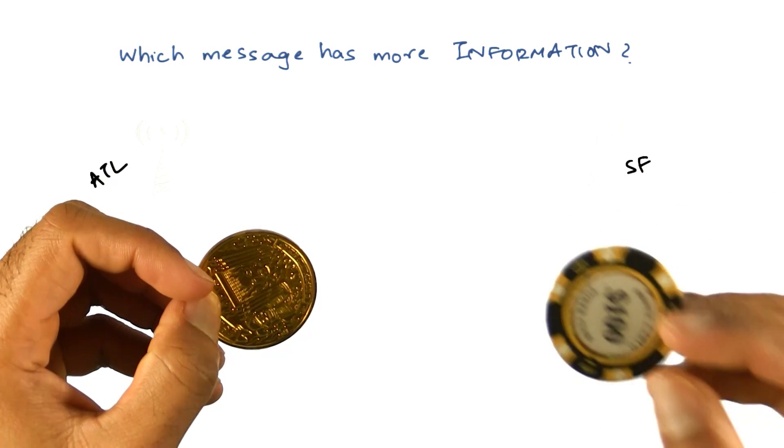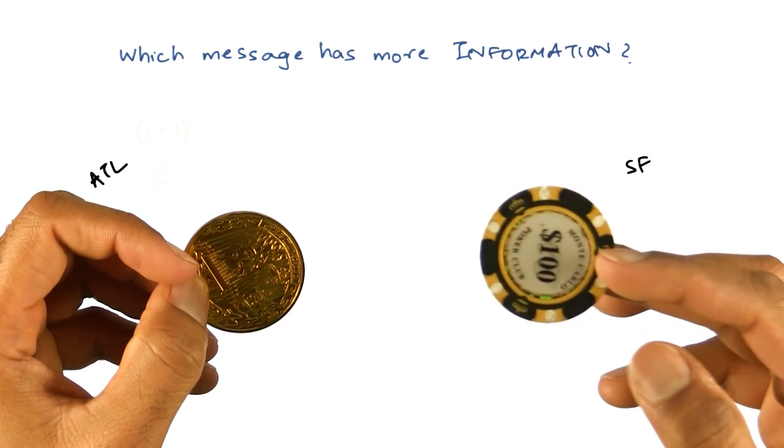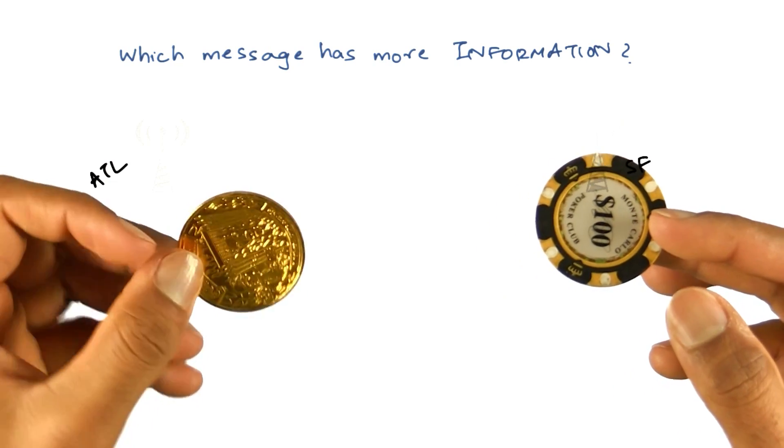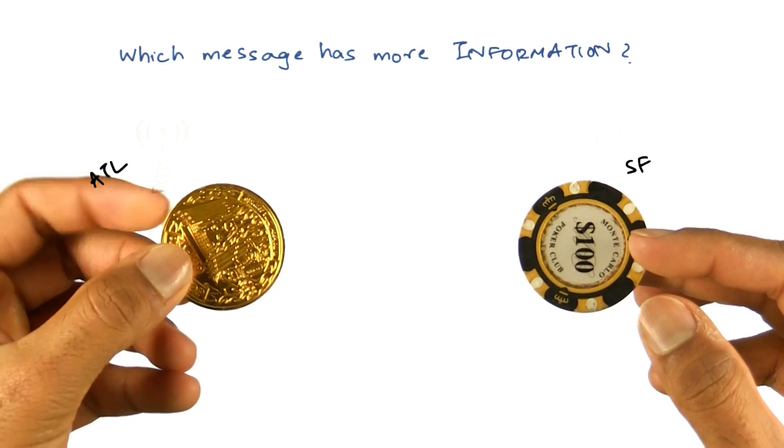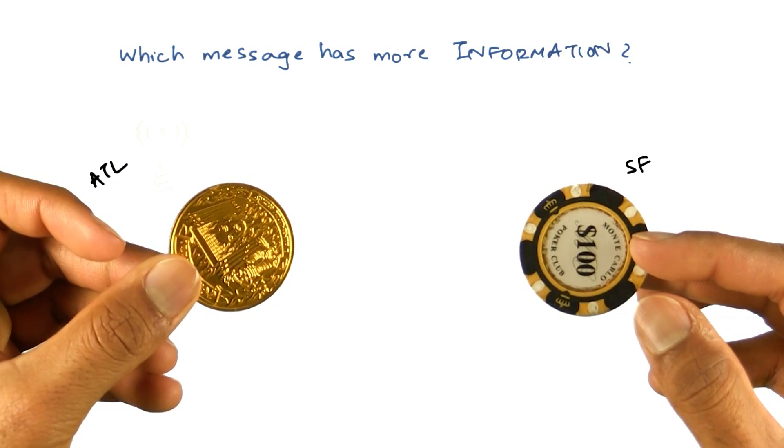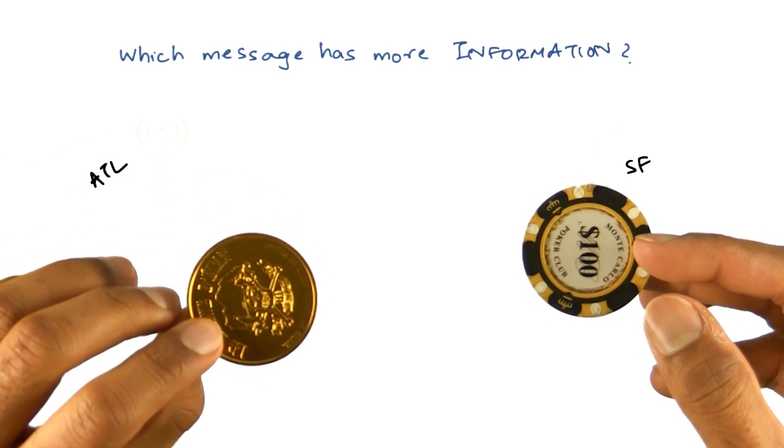So it's a biased coin. Every time I flip, it's always going to have the same state. While when I flip this, it might either end up here 50% of the times, or end up here 50% of the time.